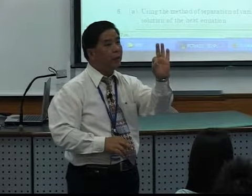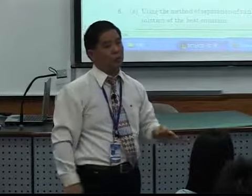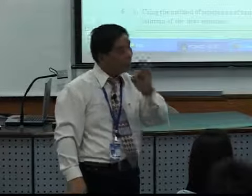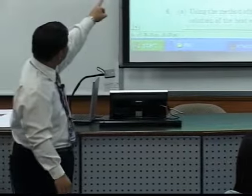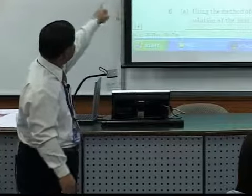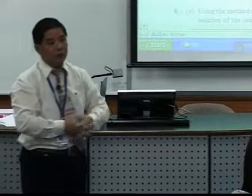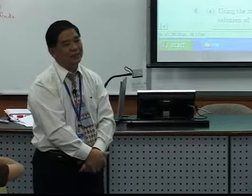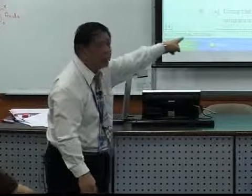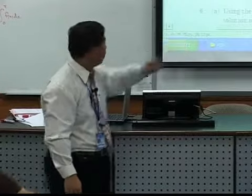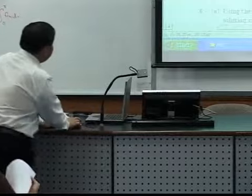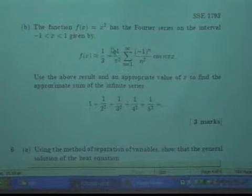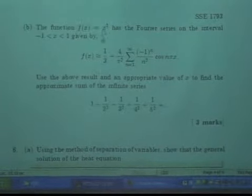So kalau you perhatikan tiga markah, takkanlah kerja dia dua muka surat. You perhatikan, you look at the question. The function f(x) = x² has a Fourier series - that means it's already given to you. Jangan pergi pandai-pandai cari a_n and b_n. There are people who do this and didn't realize that the marks is only three marks. So soalan ini, you patut guna, you are supposed to find out what is the right value of x.